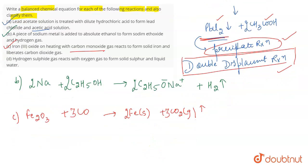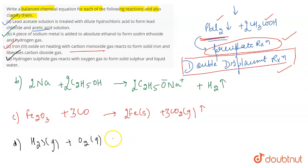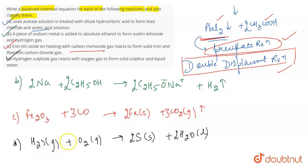The next part: hydrogen sulfide gas (H₂S) reacts with oxygen gas (O₂) and it leads to the formation of solid sulfur along with water in the liquid state. To balance this, you get 2H₂S, O₂, 2S, and 2H₂O. That is the correct balanced chemical equation.